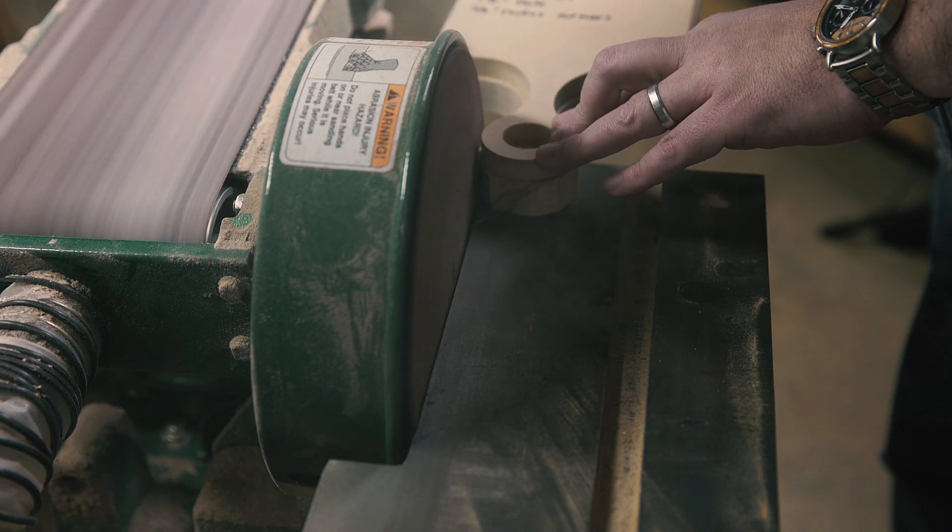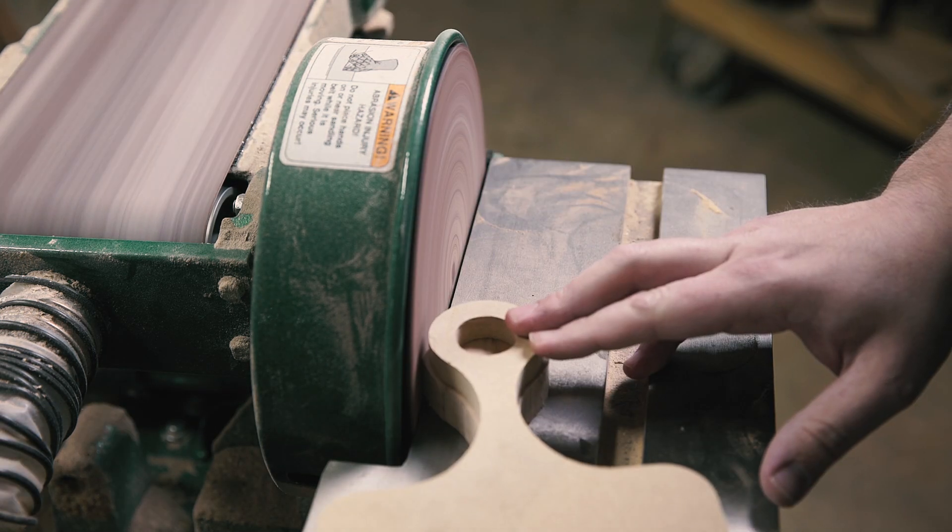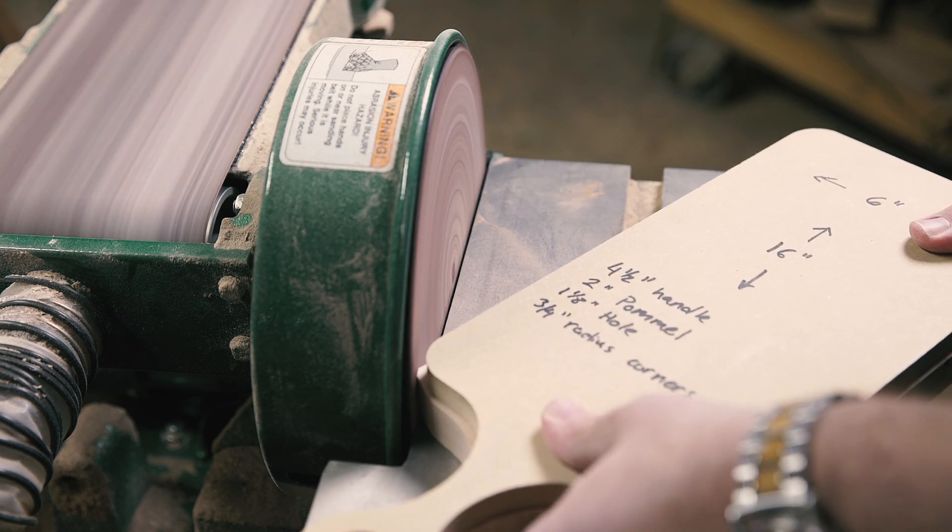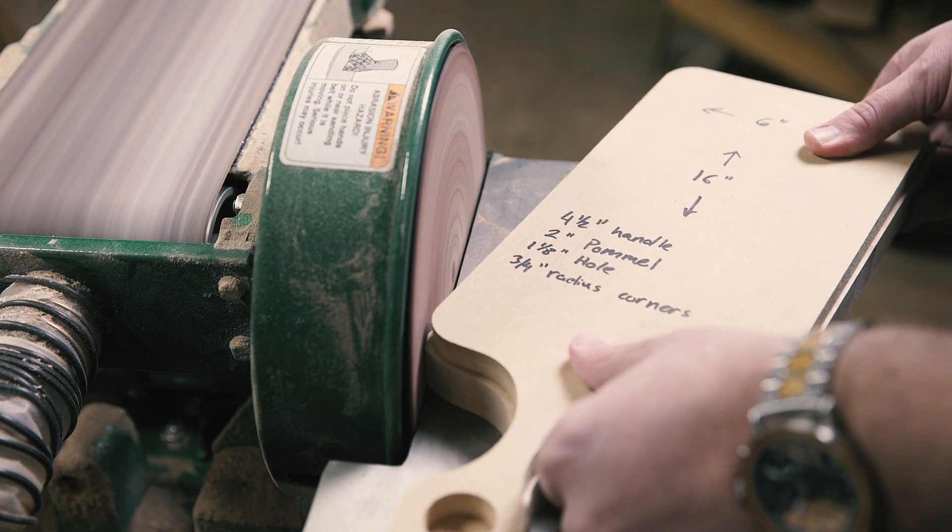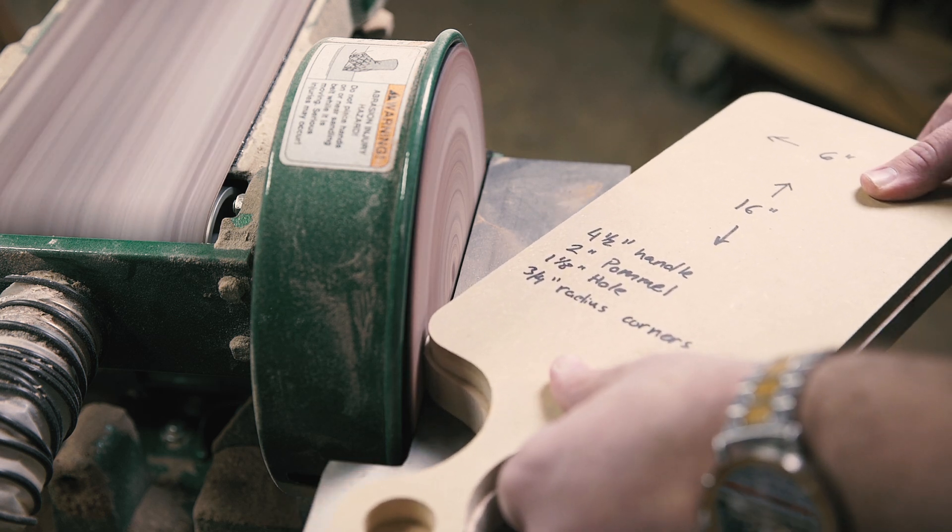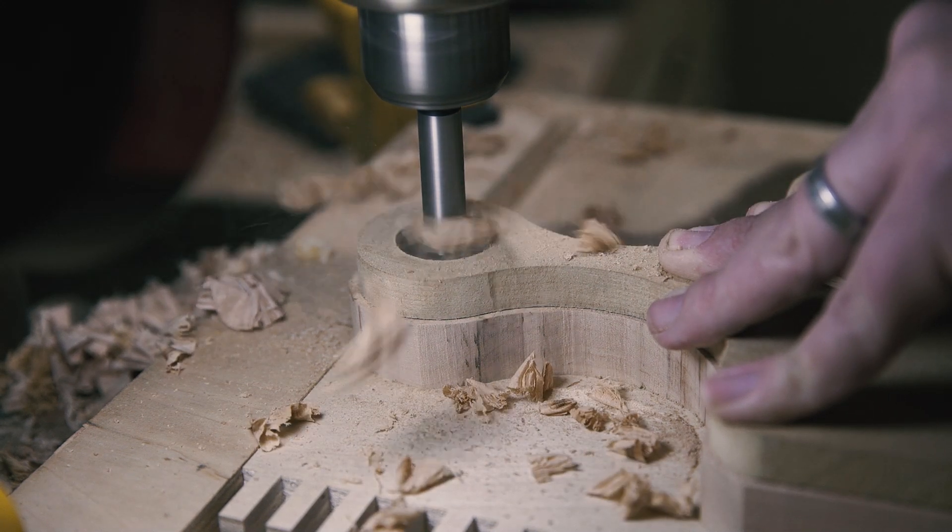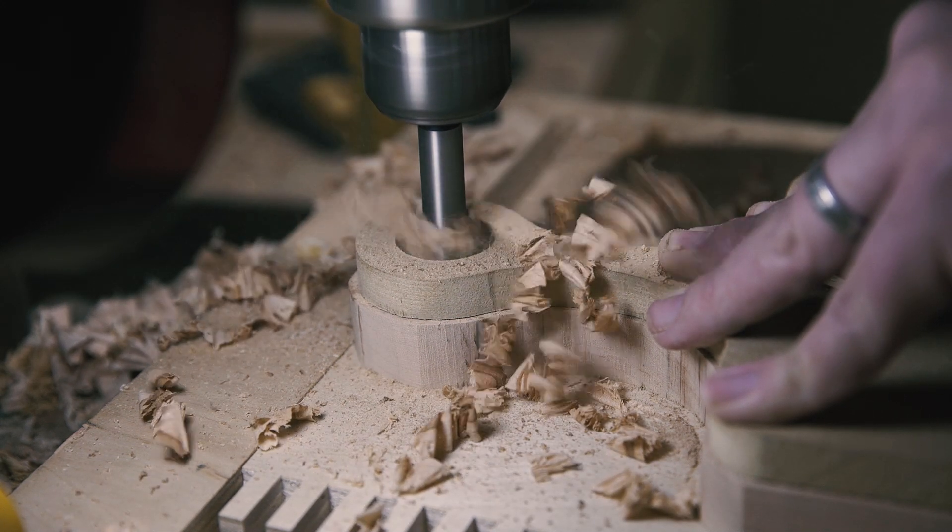The reason I'm trying to get it so close to the template is I'm using very figured maple, which is notorious for chip out, and I'll be routing on all grain directions. From there, I drill out the hole in the pommel, then head to the router table.